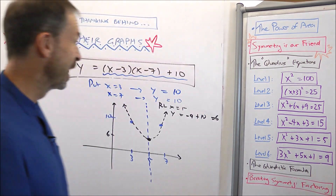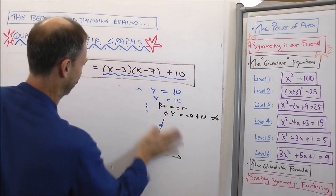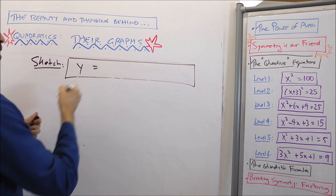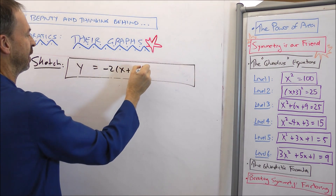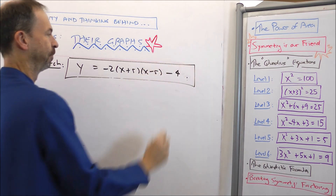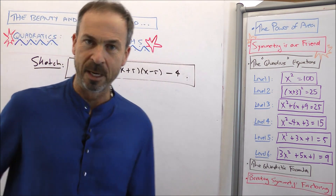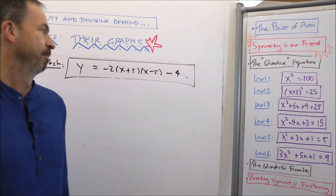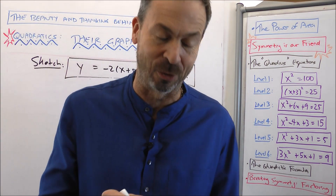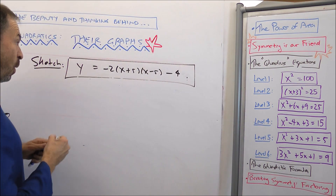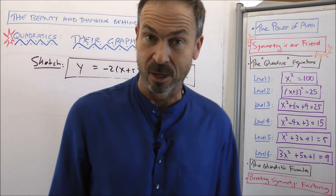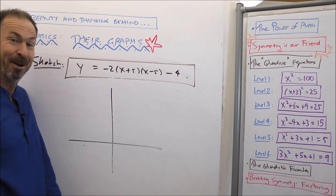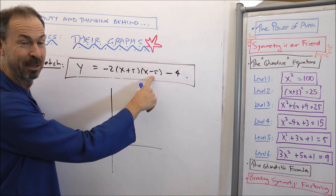That's the key: find two symmetrical points on a symmetrical graph, then use common sense from there. This is kind of fun — let's do another one. The new question: please sketch a graph of negative 2 times (x plus 5) times (x minus 5) minus 4. It's a strange-looking formula, but if I expand it, it will be a quadratic — something x squared, something x, and some number. So I know it's a symmetric U-shaped graph somewhere on the plane. There are two interesting x values staring me in the face: x equals negative 5 and x equals 5.